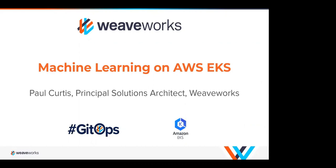Thank you very much for joining us. Welcome, everybody. This is week seven of our GitOps on AWS webinar series, and today we're focusing on machine learning models on AWS EKS. Following today, we will be sharing our registration links for our complimentary hands-on workshop this Thursday. The workshop is free and sponsored by our partners, AWS, so stay on until the end and we will send out the link for you to register.